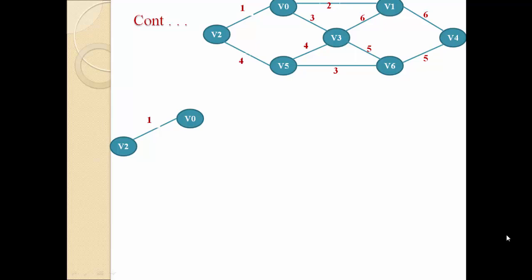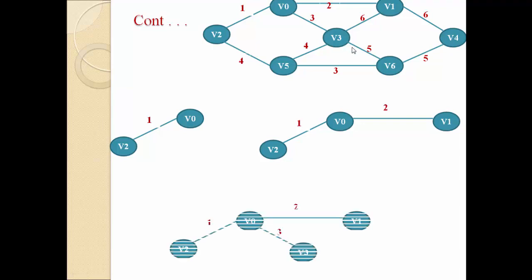Now select another edge with minimum cost. V0 to V1 has a cost of 2, which is the minimum among all remaining edges, so our next selected edge is V0 to V1. Next, find the edge with minimum cost: V0 to V3 has cost 3, and V5 to V6 also has cost 3. Following numeric ascending order, we select V0 to V3 first. So the next selected edge is V0 to V3 with cost 3.